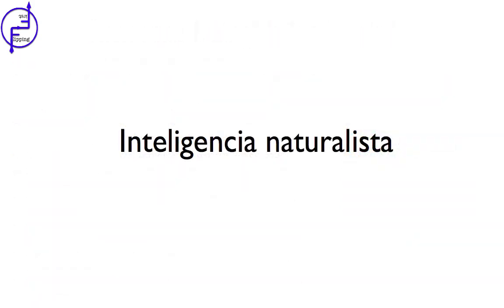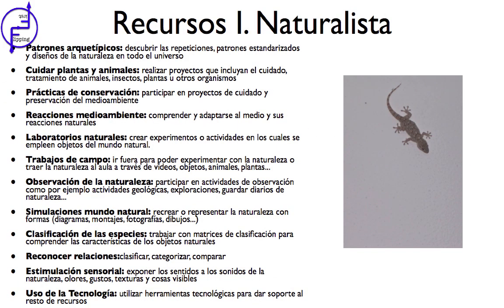Utilización de la inteligencia naturalista en el aula. La inteligencia naturalista fue una de las últimas que incorporó Gardner en su teoría, pero no por ello es menos importante. Para fomentar esta inteligencia podemos utilizar recursos que impliquen, por ejemplo, clasificar objetos, categorizar, comparar, todo lo que tiene que ver con el medio ambiente y con una manera de pensar relacionada con la explicación de los fenómenos naturales y la observación de la naturaleza, como realizar actividades al aire libre, trabajar en reconocer relaciones y utilizar los recursos tecnológicos para dar soporte al resto.